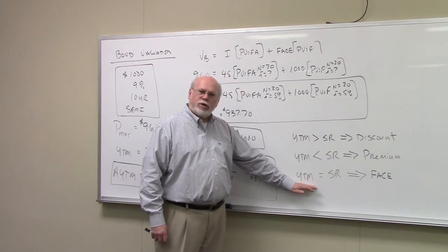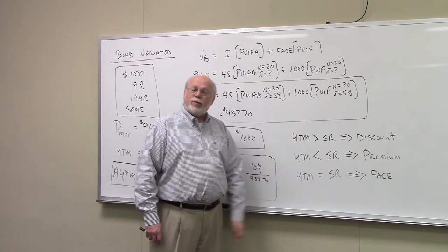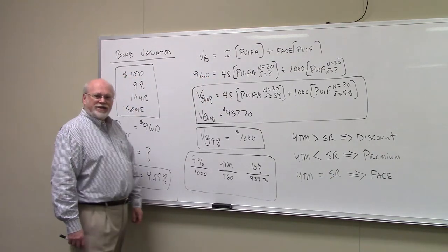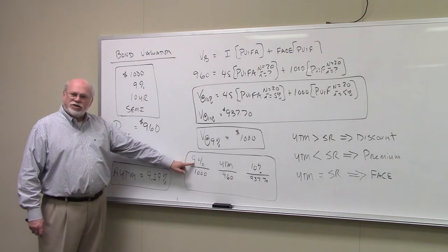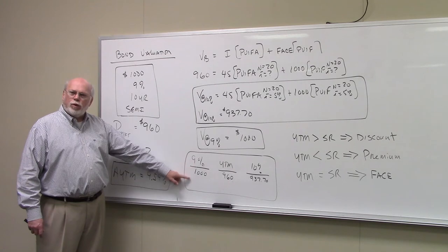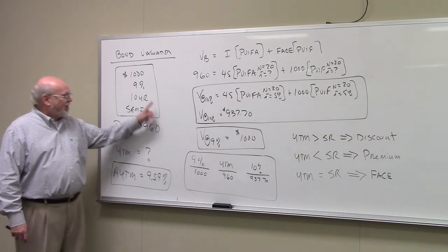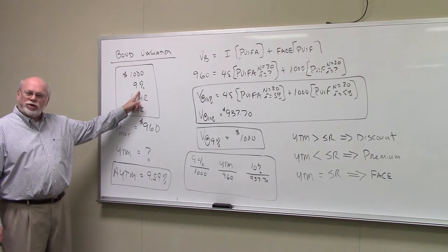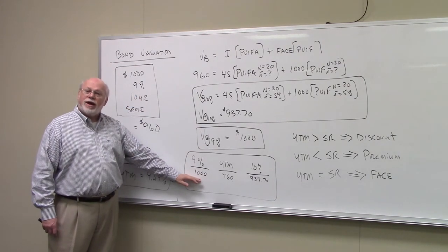And if the yield to maturity on the bond is the same as the stated return, the bond will sell at face value, which in this case is $1,000. So, when we ask ourselves, if the yield on this bond were exactly 9%, what would be the price of the bond in the market? Well, if the yield were exactly equal to the stated return on the bond, the bond would sell at face value of $1,000.